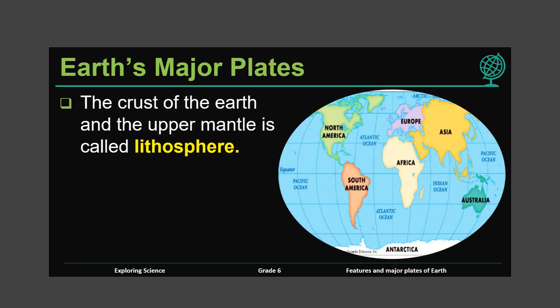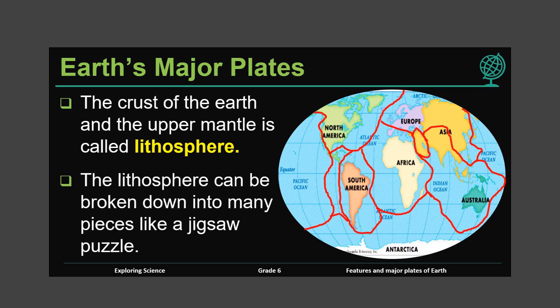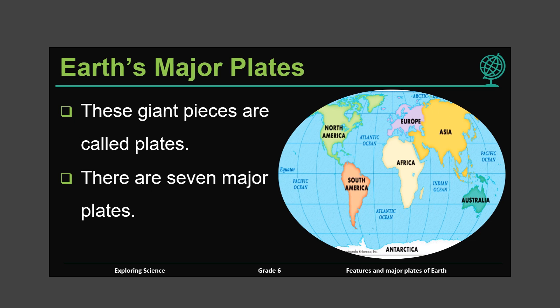Earth's major plates. The crust of the Earth and upper mantle is called the lithosphere. The lithosphere can be broken down into many pieces, like a jigsaw puzzle as you can see from the diagram. These giant pieces are called plates. There are seven major plates.